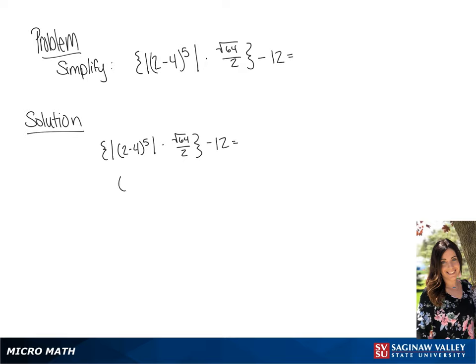So in our parentheses, we are going to get negative 2 to the 5th power in absolute value symbols, and then our fraction is going to turn into 8 over 2.